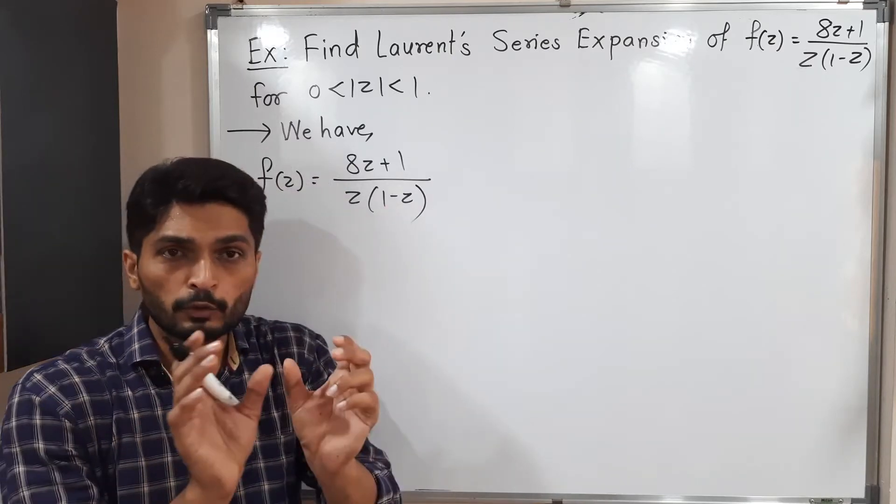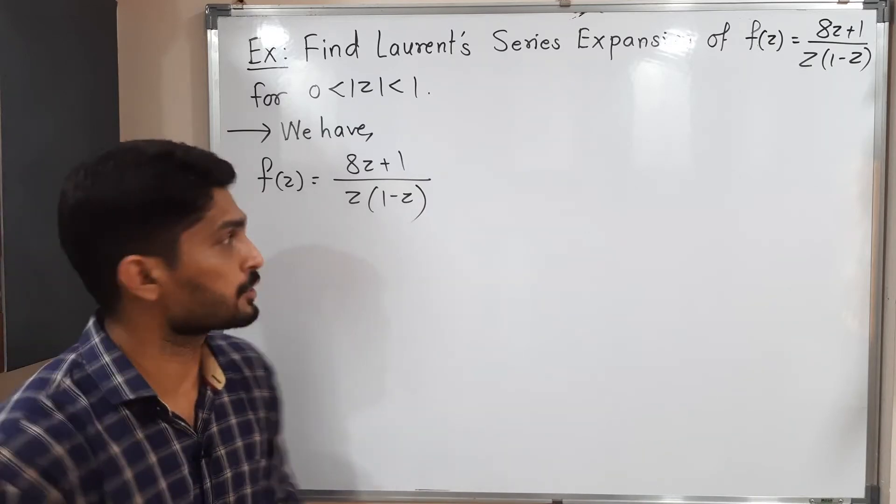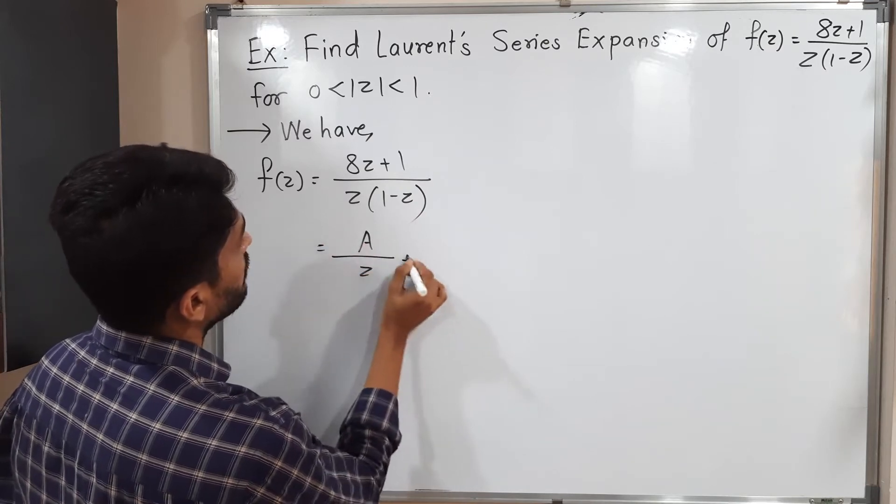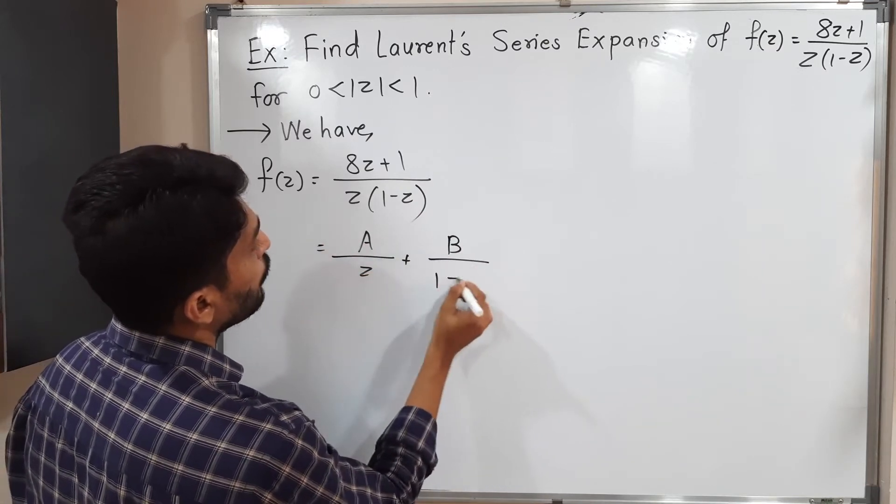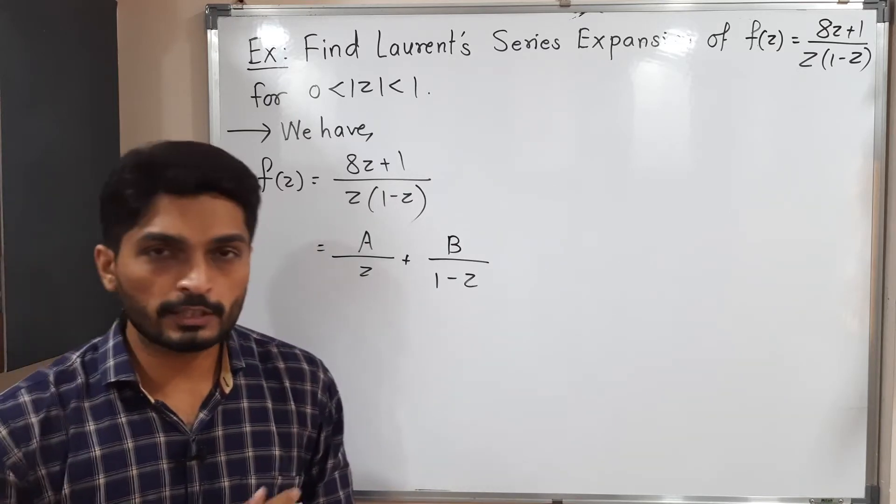What will I do? I need to make these two brackets separate. For that I need to use partial fractions. I am going to consider A upon z plus B upon 1 minus z. Our target is to find values of A and B. So let us cross multiply.